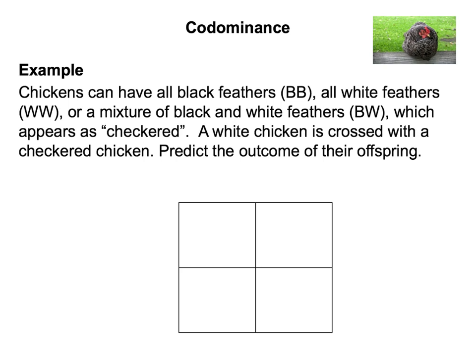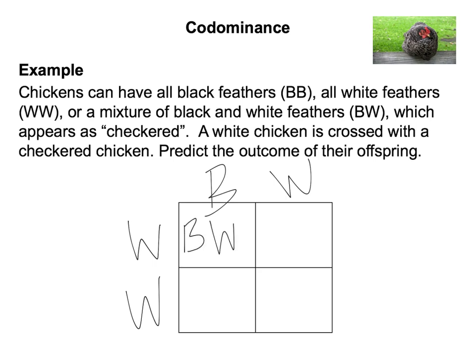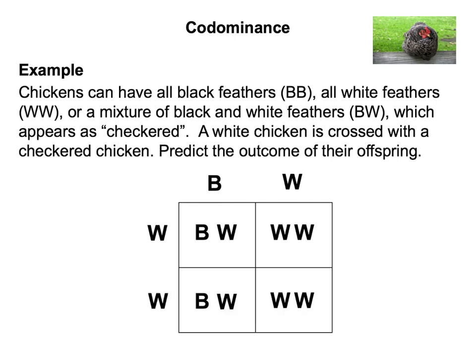Here's an example. Chickens can have all black feathers (BB), all white feathers (WW), or a mixture of black and white feathers (BW), which appears as checkered. A white chicken is crossed with a checkered chicken. The white chicken is WW and the checkered chicken is BW. Crossing these, we can determine that 50% of offspring will likely be checkered and 50% will likely be white.